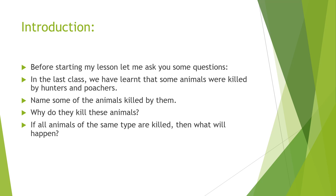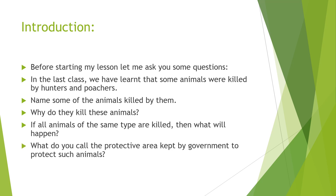If all animals of the same type are killed, what will happen? For example, if all tigers are killed, then obviously you would not be able to see them anymore. Today we shall learn about the national parks of India, and what protective areas the government has set up to protect such animals.